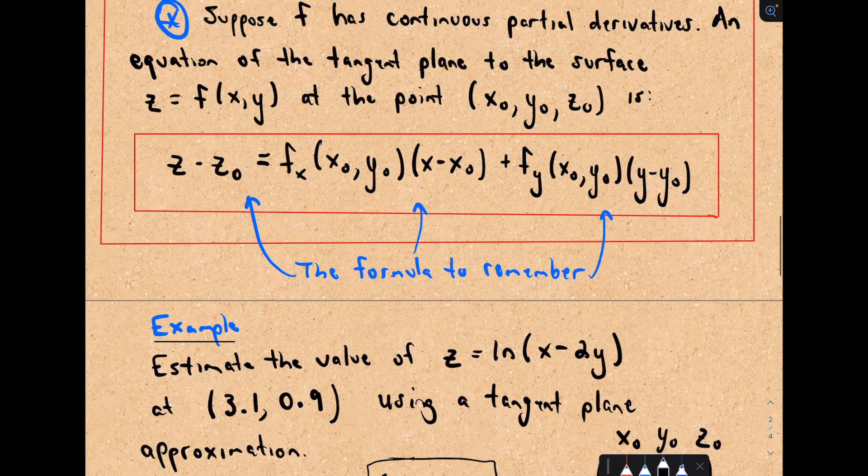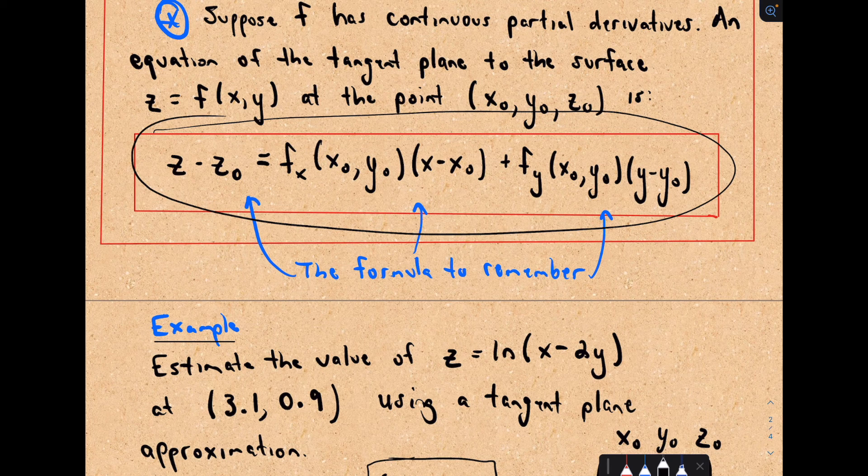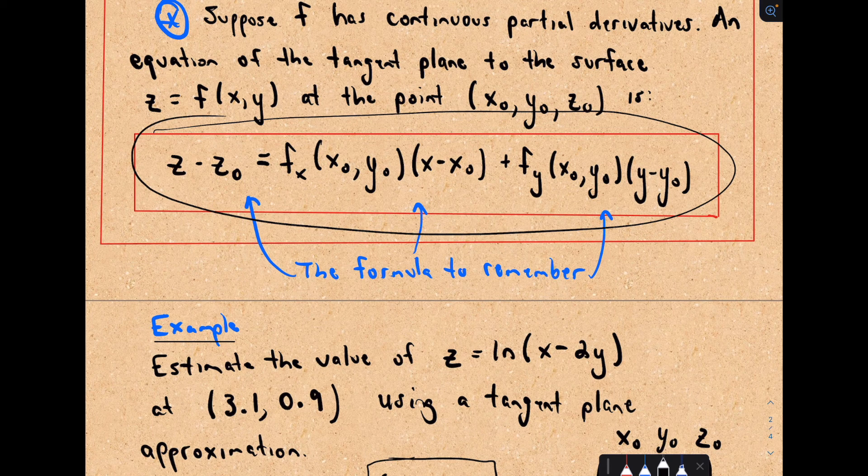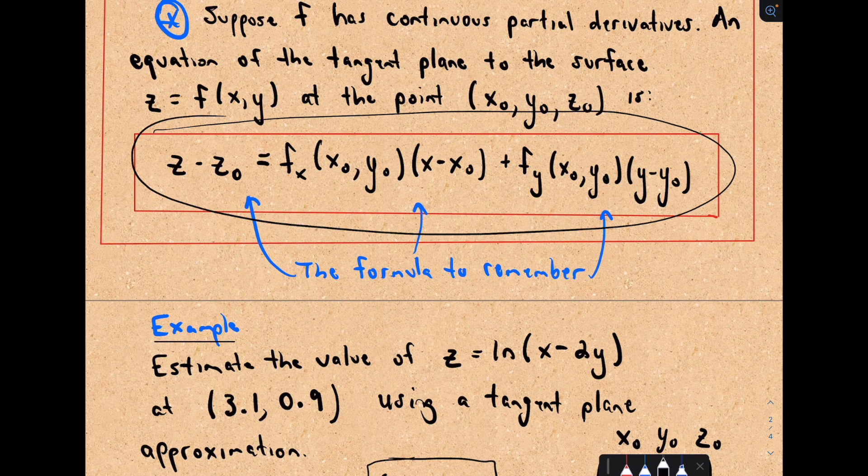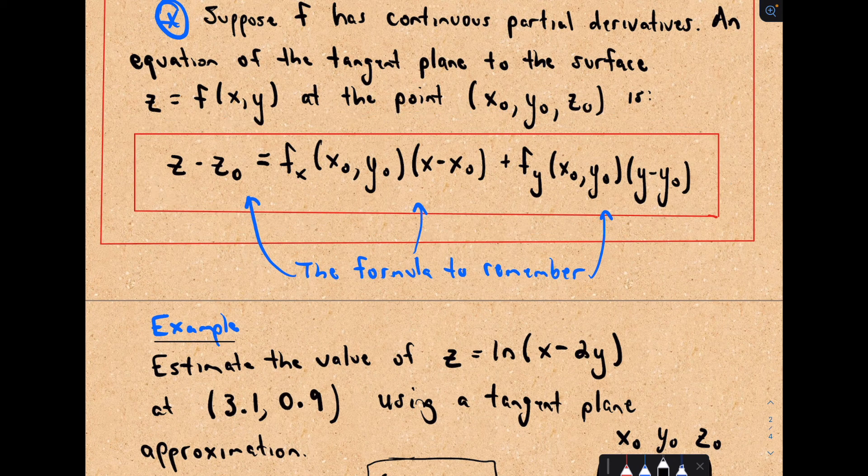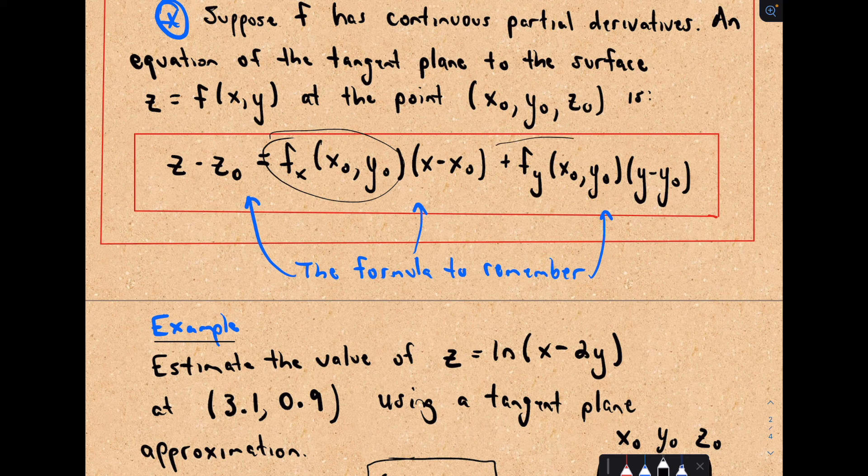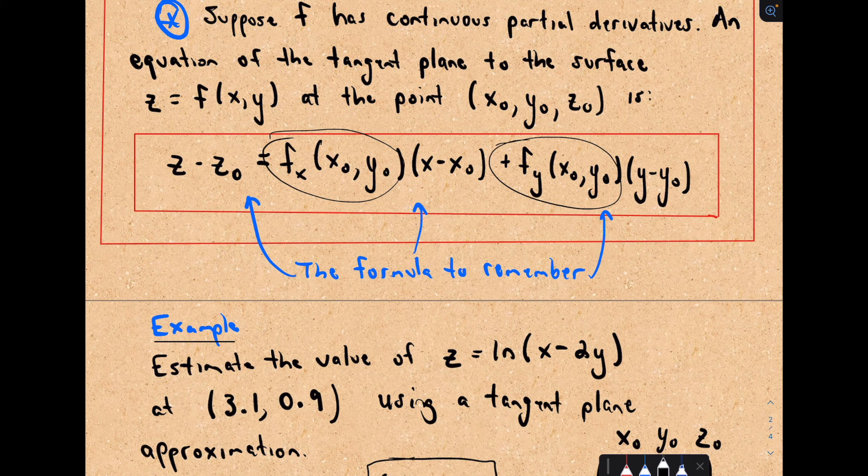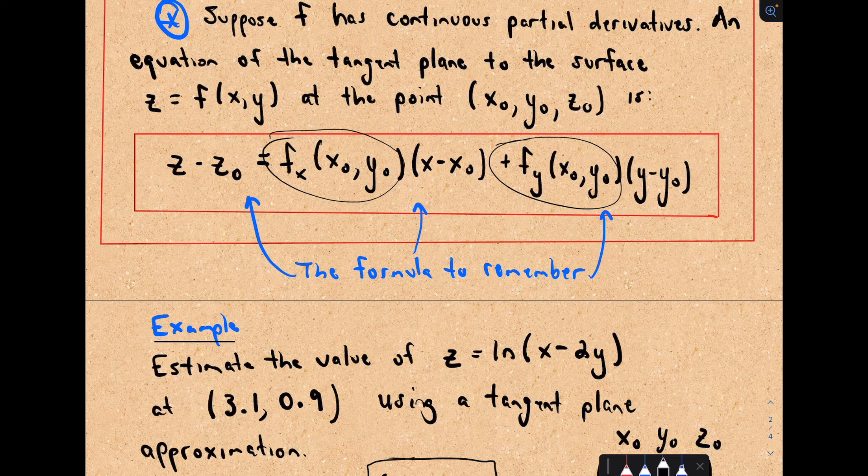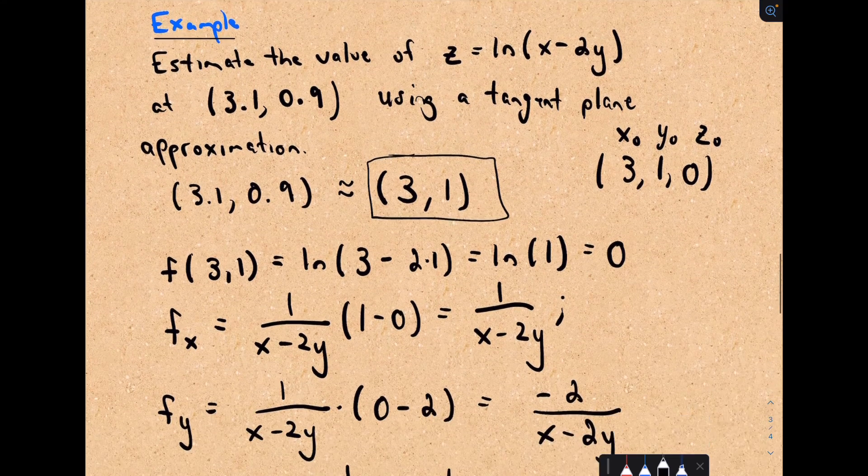But otherwise, if you've forgotten how to do linearizations in two dimensions, I would say go back and look at that. It shouldn't take you too long to remember. You're just finding a tangent line. And I think you'll see how similar this formula is to that formula in two dimensions. You're still doing the same thing, you're still using derivatives. But now we've got two independent variables, so now we have to think about these partial derivatives. But otherwise, it's a very similar formula.